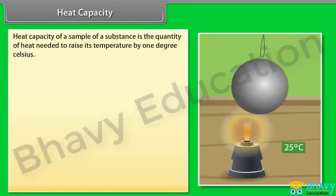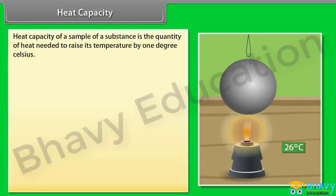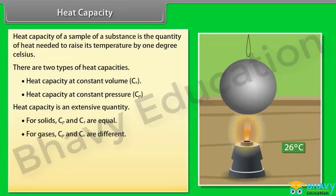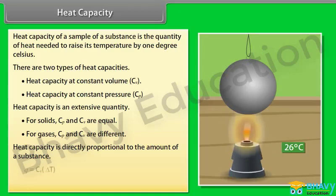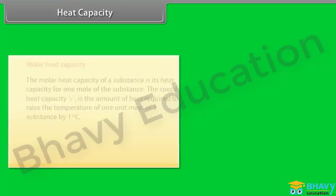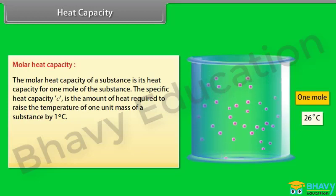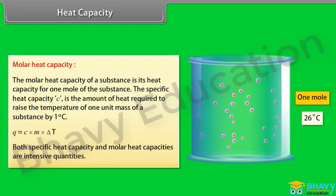Heat capacity: the heat capacity of a sample of a substance is the quantity of heat needed to raise its temperature by 1 degree Celsius. There are two types of heat capacities: heat capacity at constant volume and heat capacity at constant pressure. Heat capacity is an extensive quantity. For solids, Cp and Cv are equal; for gases, Cp and Cv are different. Heat capacity is directly proportional to the amount of substance. Q = Cp × delta T, where delta T = Tf − Ti. The molar heat capacity is the heat capacity for one mole of the substance. The specific heat capacity is the amount of heat required to raise the temperature of 1 unit mass of a substance by 1 degree Celsius: Q = C × m × delta T. Both specific heat capacity and molar heat capacity are intensive quantities.